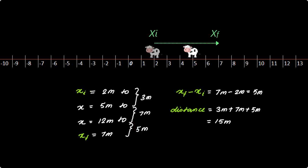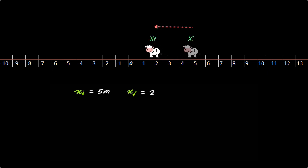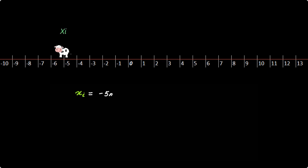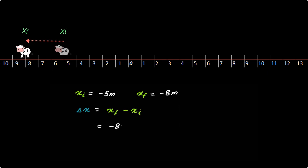Let us take another situation where you move from x equals 5 meters to x equals 2 meters. The displacement is delta x equals x_final minus x_initial, which equals 2 meters minus 5 meters, equaling minus 3 meters. Your displacement in magnitude is 3 meters, but the minus sign indicates you have moved in the negative direction on the x axis, or to the left. The sign in front of the displacement number indicates the direction of displacement. Now if x_initial is minus 5 meters and the final position is minus 8 meters, then delta x equals minus 8 meters minus minus 5 meters, which equals minus 3 meters — again showing you have moved to the left by 3 meters.